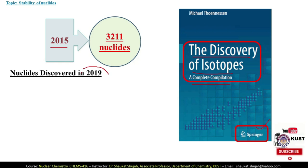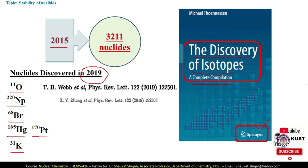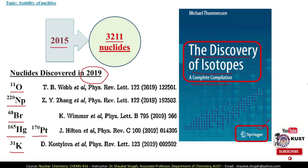In 2019, six new nuclides were reported, including Oxygen-11, Neptunium-220, Bromine-68, Mercury-165, Platinum-170, and Potassium-31. These discoveries have been published in Physical Review Letters, Physics Letters B, and Physical Review C.